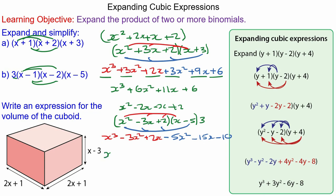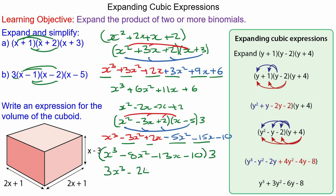First we collect the like terms to get x cubed minus 8x squared minus 13x minus 10, and then multiplying through by 3 gives us 3x cubed minus 24x squared minus 39x minus 30.